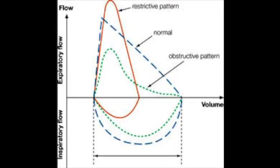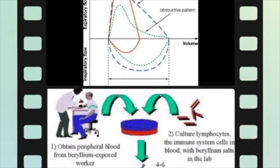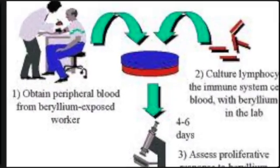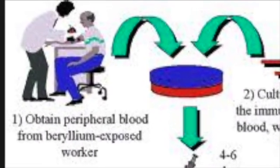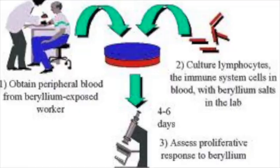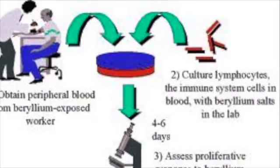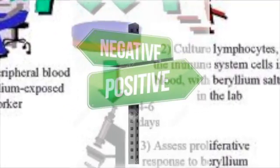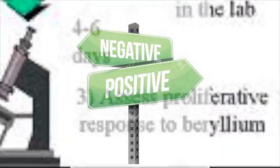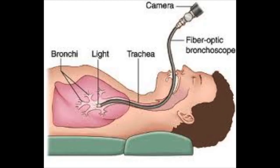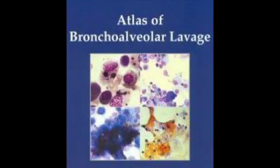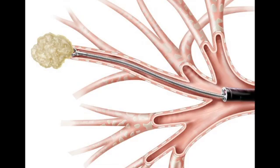Possible pulmonary function test findings include lower forced vital capacity and diffusion capacity for carbon monoxide, and a restrictive, obstructive, or mixed pattern may be observed. Once chronic beryllium disease is suspected, the next step is to perform a beryllium lymphocyte proliferation test. Two positive test results define sensitization. Patients with positive blood results typically undergo bronchoscopy, bronchial alveolar lavage, and transbronchial biopsy.